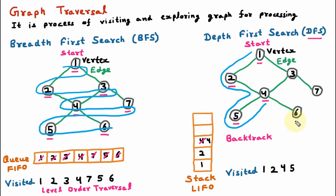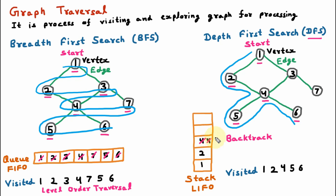Now we go to neighbor 6. We visit vertex 6 and mark it as visited. Then we explore vertex 6, but there is no further neighbor available. We are again at the last vertex at depth — no further solution is possible. We have to backtrack again. The stack tells us where to go: we pick the top element which is 4, meaning we go back to vertex 4. From vertex 6 we backtrack to vertex 4.